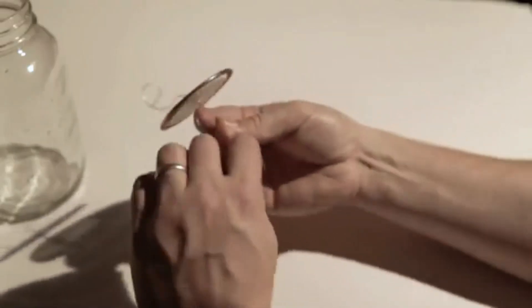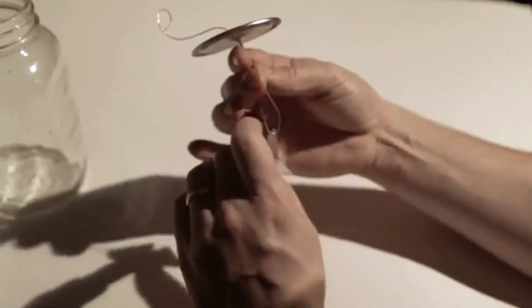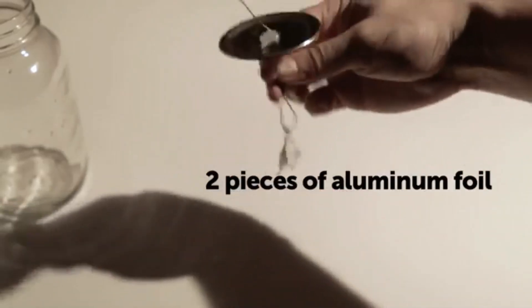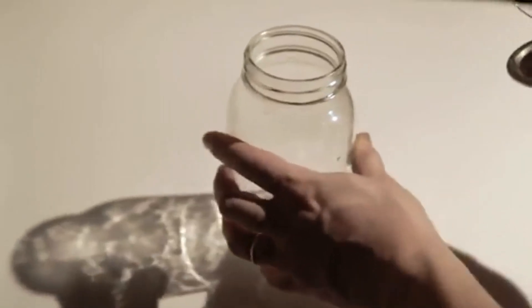In this video we look at a simple demonstration of an aluminum foil electroscope. We take two pieces of aluminum foil and string them into a copper wire. That copper wire is run through the lid of a glass jar and then we set things in place.